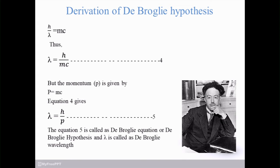Equation number 5 is called the de Broglie equation or de Broglie hypothesis, and λ is called the de Broglie wavelength. So this first section focuses on the statement and derivation of the de Broglie hypothesis — that is equation number 5.